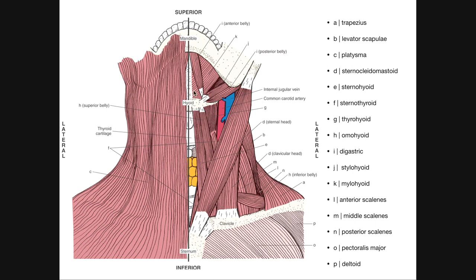Let's look at this figure and identify some things. We're looking at an anterior view. This bone up here is our mandible. Down here we have the manubrium of the sternum, and here is our clavicle. Also right up here is the hyoid bone. Once we peel off the superficial muscles, the hyoid bone is going to be a landmark for the hyoid layer, so we'll know if we're talking about a suprahyoid muscle or an infrahyoid muscle.